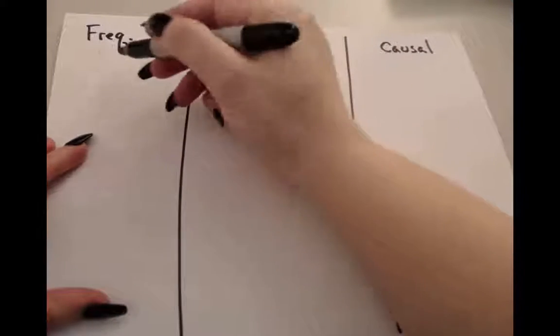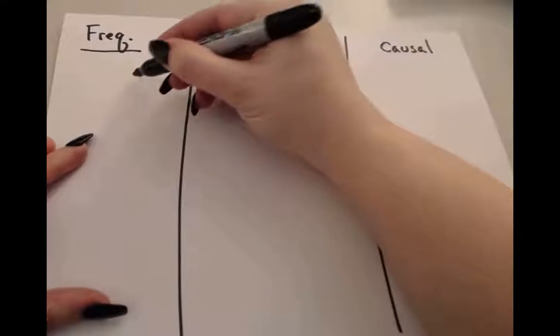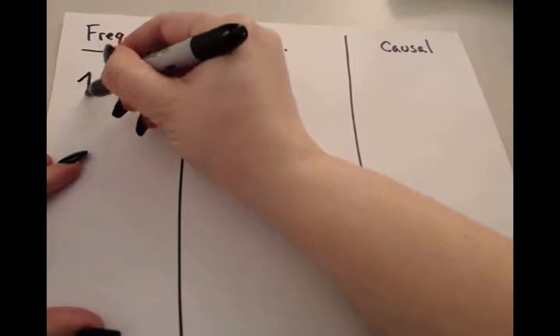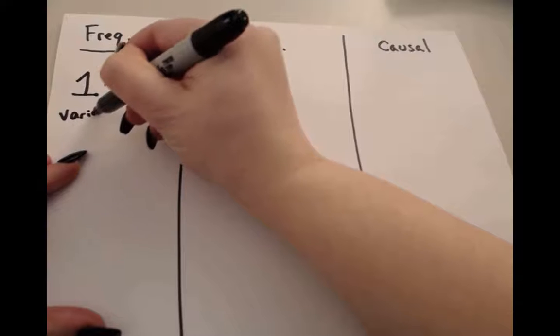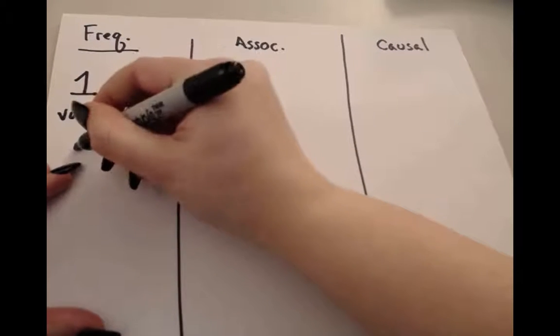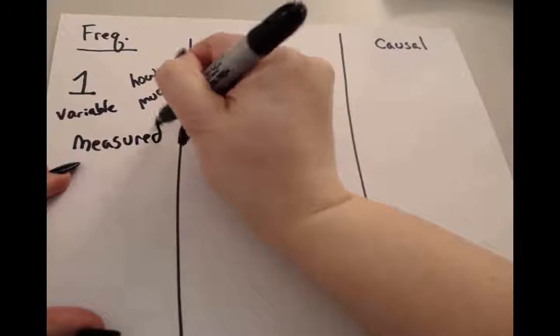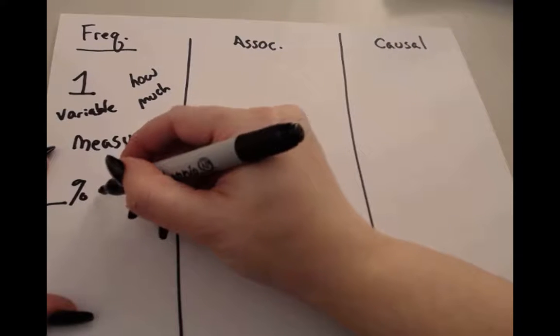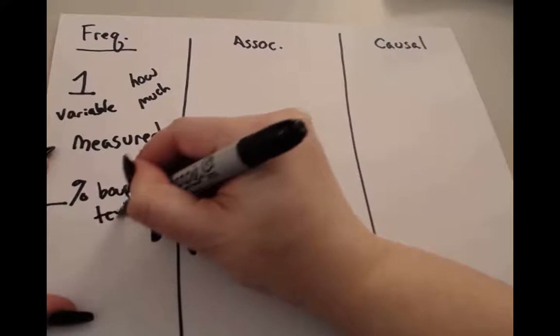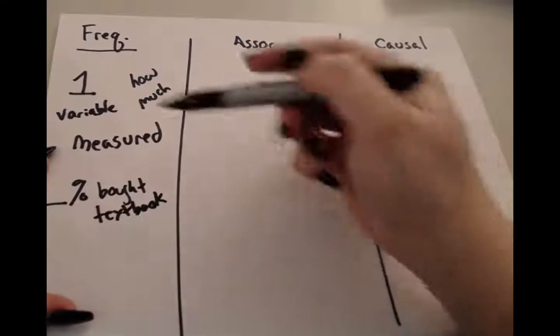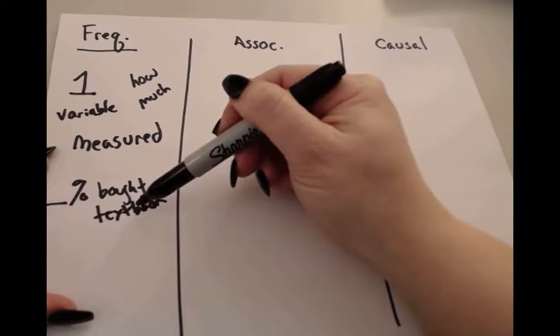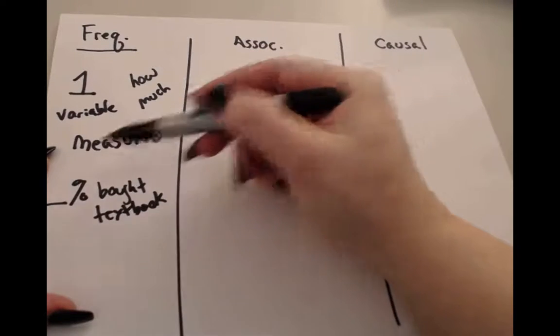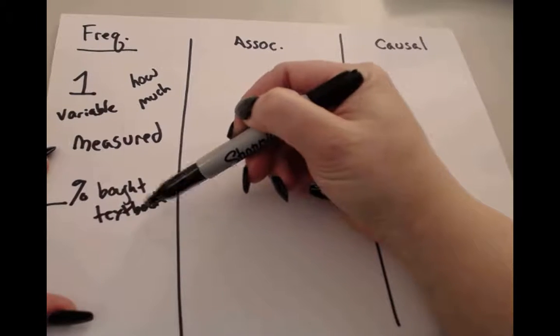In a frequency claim, we're literally trying to understand what is the frequency of something. So, how much or how often? In a frequency claim, there is one and only one variable. And that variable is only measured. So, if I were to say something like the percentage of students who bought the textbook, that would be a frequency claim because I only measured how many students bought the textbook. There's only one variable here and I'm describing how much. What is the frequency of students who bought the textbook? That's a frequency claim.